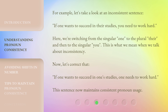For example, let's take a look at an inconsistent sentence: 'If one wants to succeed in their studies, you need to work hard.' Here, we're switching from the singular 'one,' to the plural 'their,' and then to the singular 'you.' This is what we mean when we talk about inconsistency. Now, let's correct that: 'If one wants to succeed in one's studies, one needs to work hard.' This sentence now maintains consistent pronoun usage.